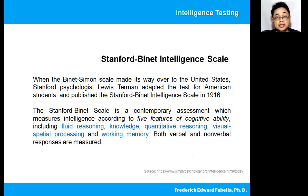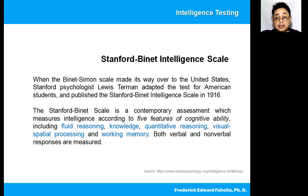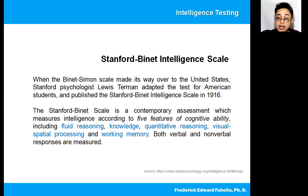The Stanford-Binet Intelligence Scale — when did this come up? When the Binet-Simon scale made its way to the United States, Stanford psychologist Louis Thurman adopted the test for American students and published the Stanford-Binet Intelligence Scale in 1916. The Stanford-Binet scale is a contemporary assessment which measures intelligence according to five features of cognitive ability, including fluid reasoning, knowledge, quantitative reasoning, visual-spatial processing, and working memory. Both verbal and non-verbal responses are measured by this test. The evolution is clear from Alfred Binet, and now we have the Stanford-Binet, which is the adapted test in the United States.